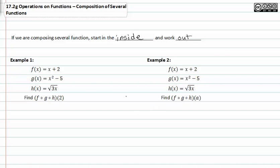In example one we see we have three functions and we need to find f of g of h of two. Since h would be in the very inside if we think about it like this, where h of two is in the very center.